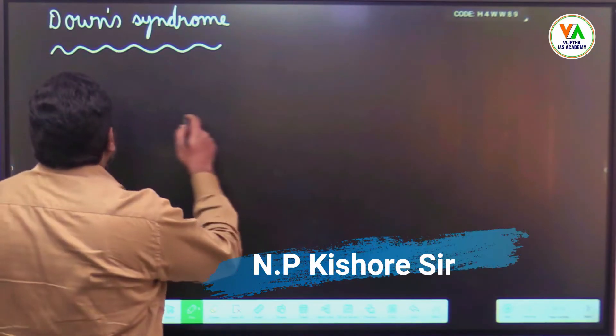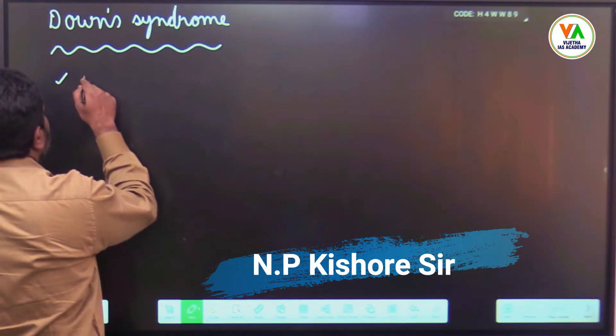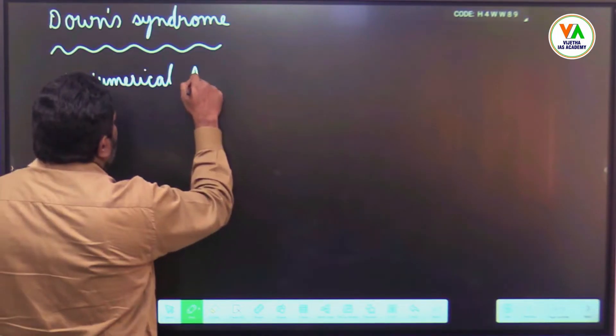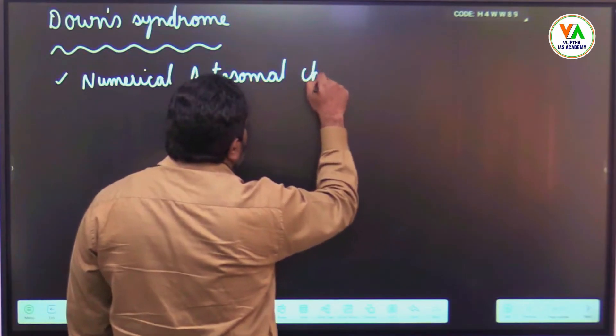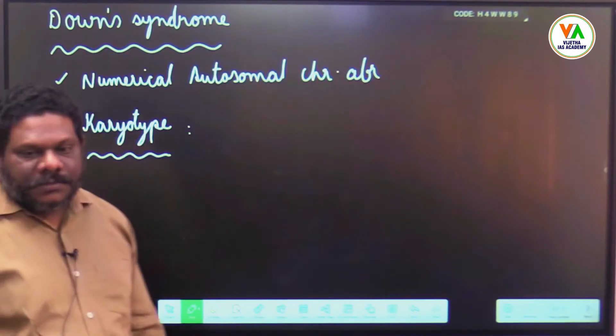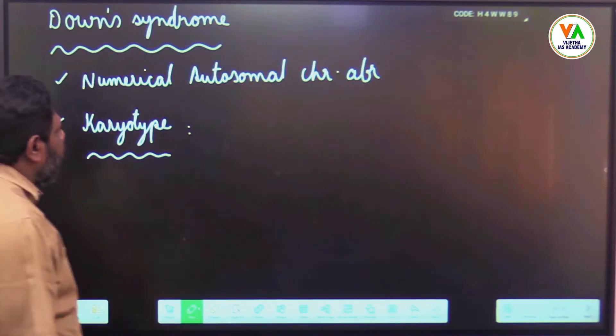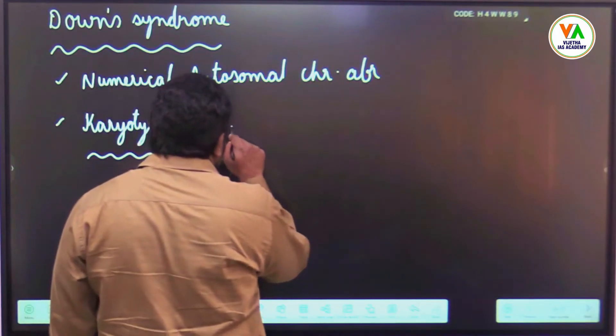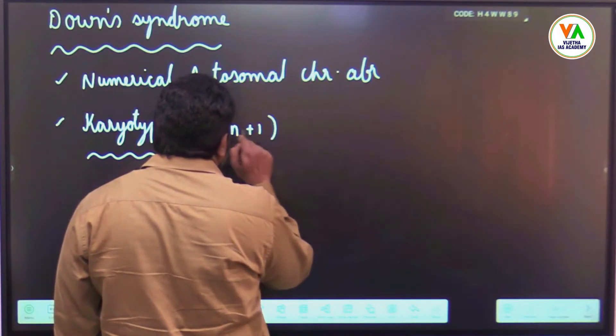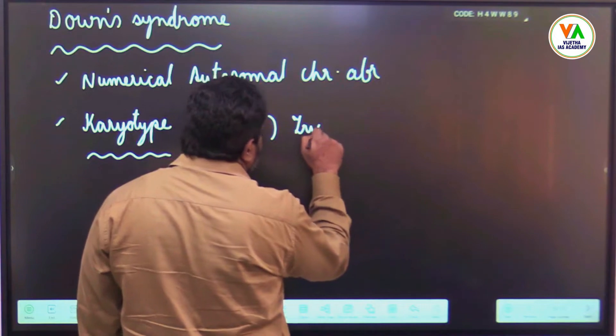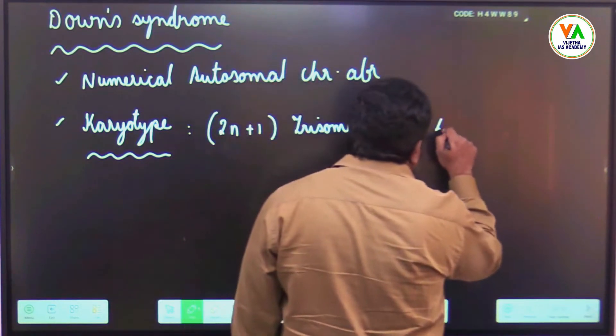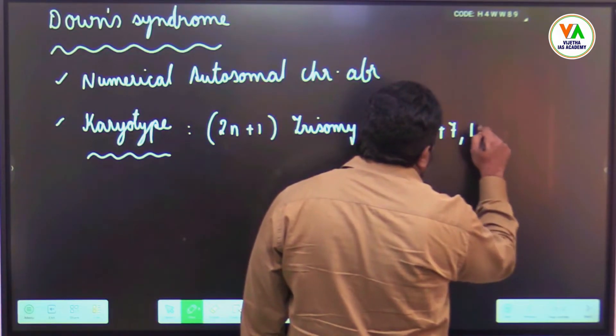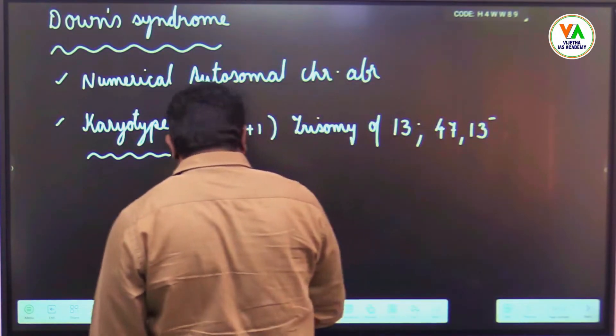What is Down syndrome? It is basically a numerical autosomal chromosomal aberration. So what is the karyotype here? 21 plus 1, that is trisomy of 21. Or you can write 47 comma 21 plus. So instead of 2 you have 3 chromosomes at position 21.